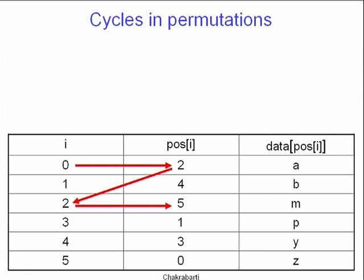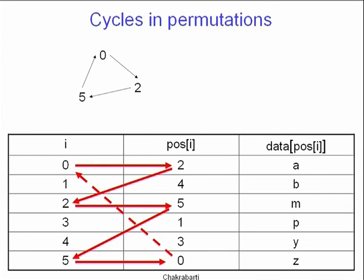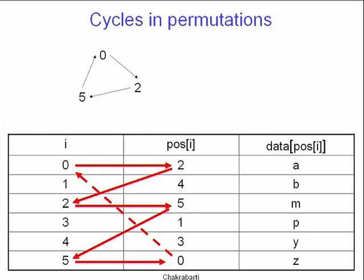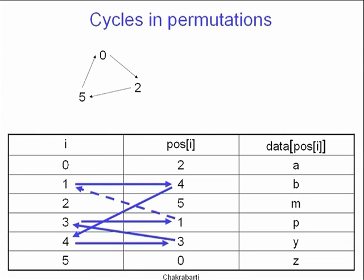Our problem was to reorganize the data array into sorted order without using a second data array of the same size. The insight is that permutations can be decomposed into cycles. For example, 0 goes to 2, 2 goes to 5, 5 goes back to 0 — that's the first cycle. Then 1 goes to 4, 4 goes to 3, 3 goes back to 1 — that's the second cycle.